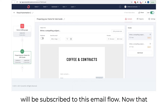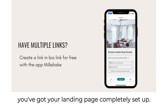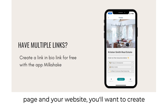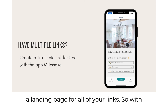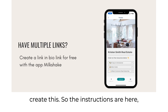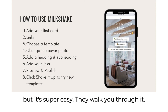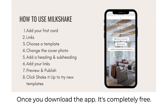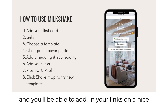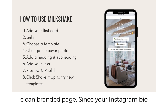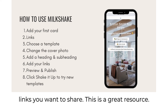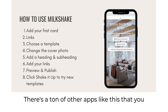Now that you've got your landing page completely set up, I want to share a great resource. If you have multiple links like your landing page and your website, you'll want to create a page for all of your links. With an app called Milkshake, you can very simply do this. It's completely free — just download the app and go through the instructions. It's super user-friendly and you'll be able to add all your links on a nice, clean branded page, since Instagram only allows one link in bio.